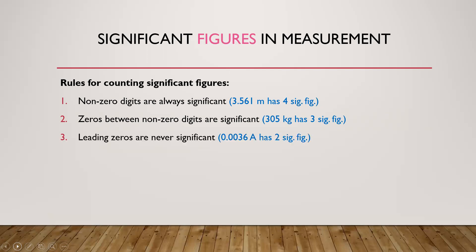Rule number 3: Leading zeros are never significant. For example, 0.0036 amperes has 2 significant figures.